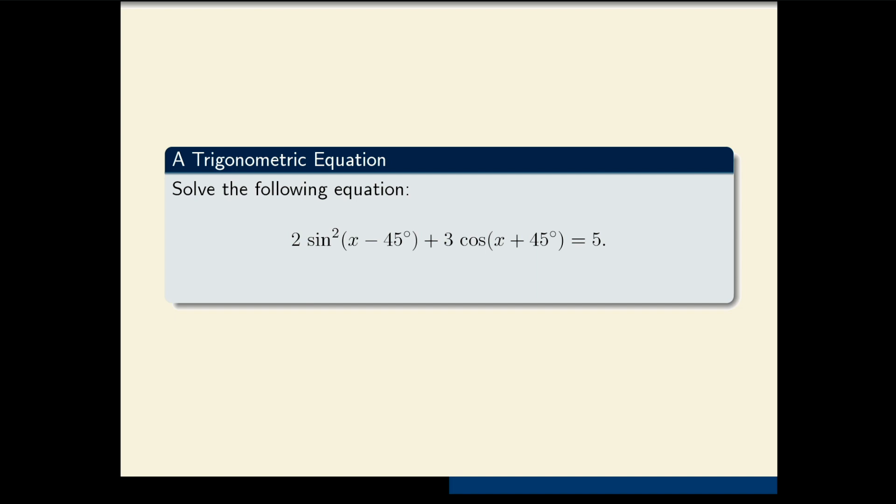Solve the following equation: 2 sine of x minus 45 degrees squared plus 3 times cosine x plus 45 degrees equals 5.